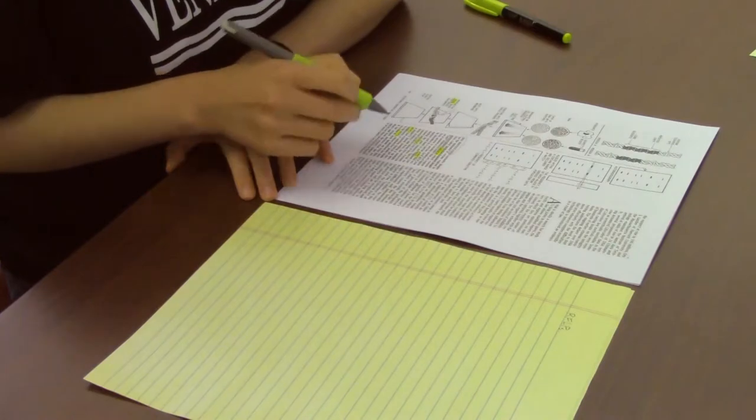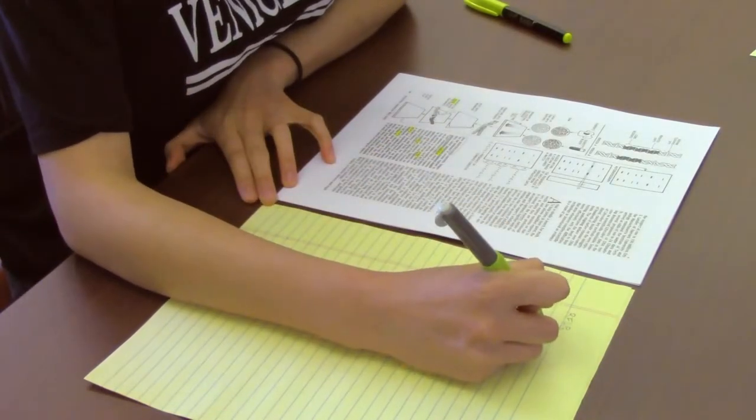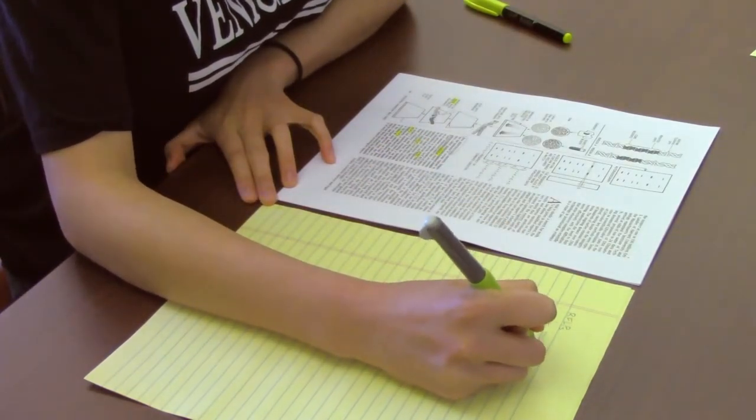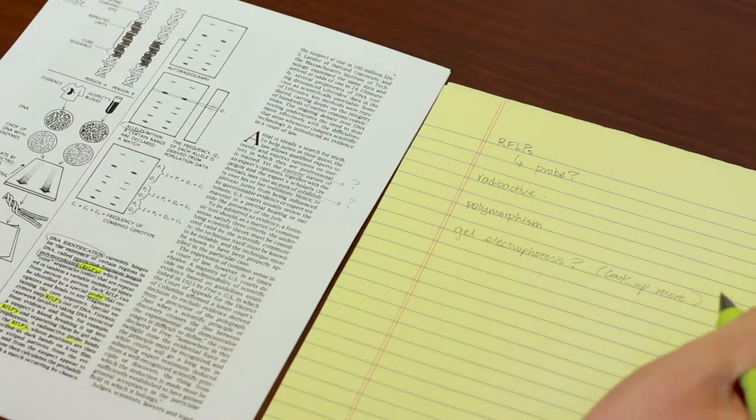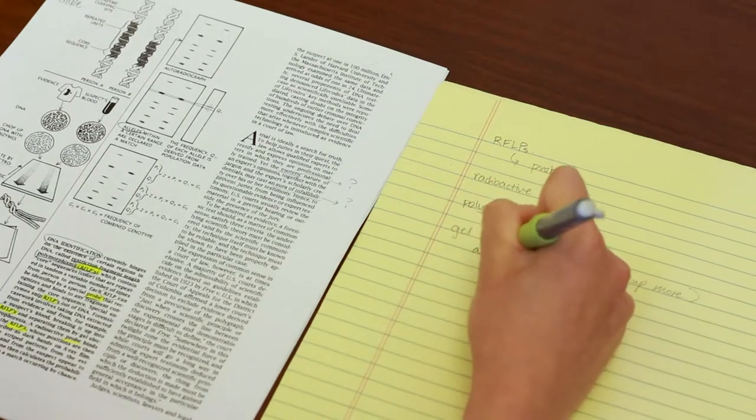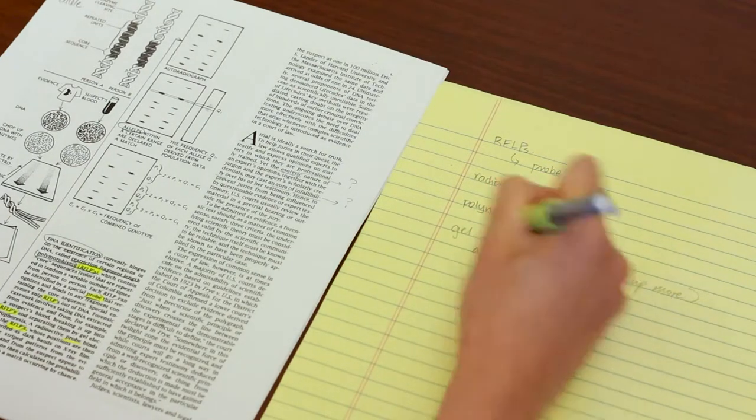Another way to identify important terminology is to consider where it is found in the text. If the term appears in the title, the thesis statement, or the description of another key concept, I'll make sure to also highlight this as a keyword to look up later.